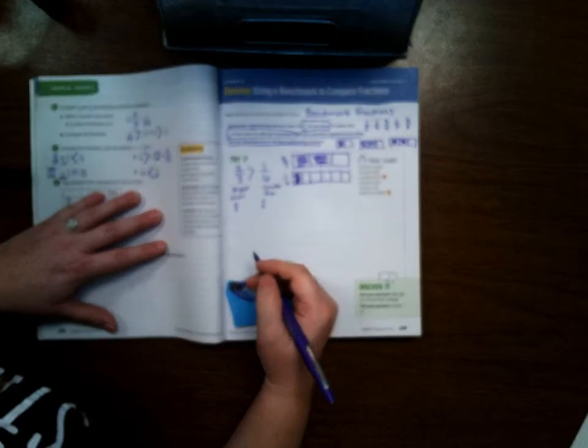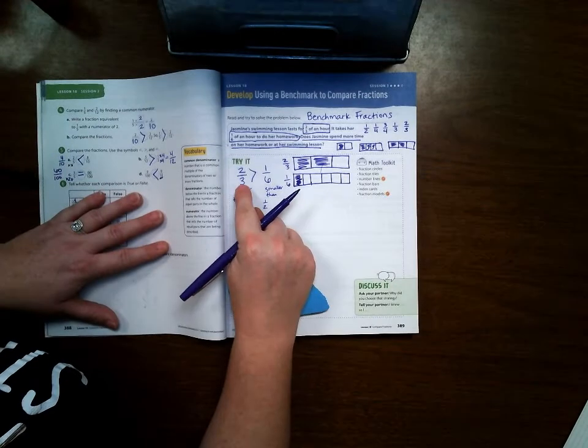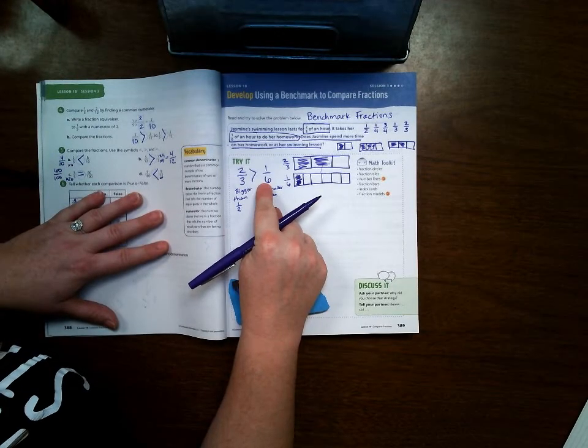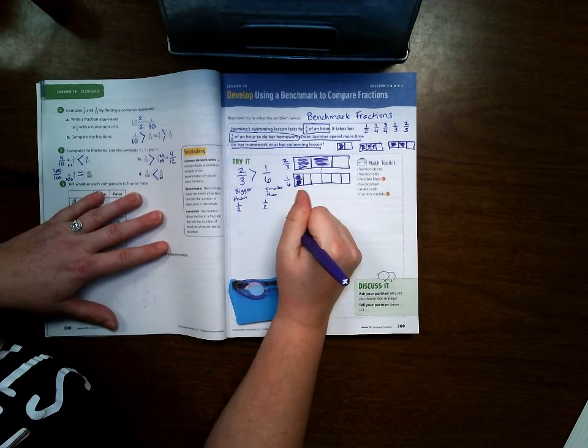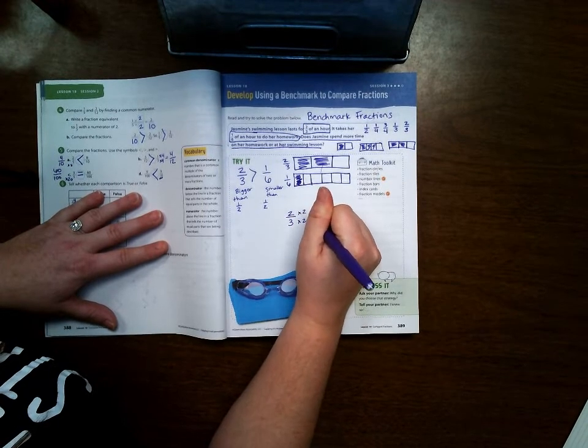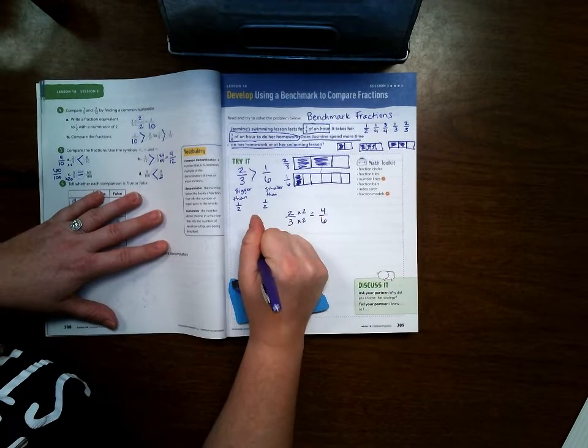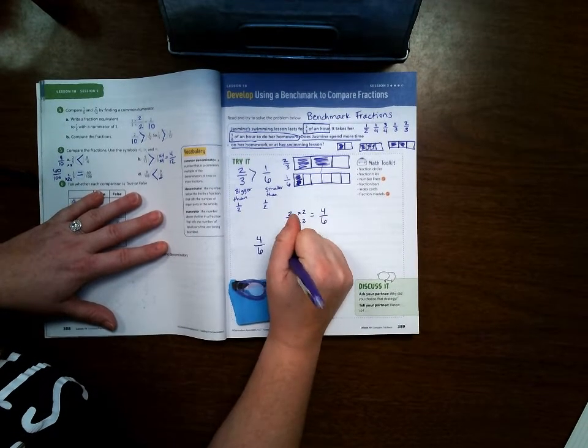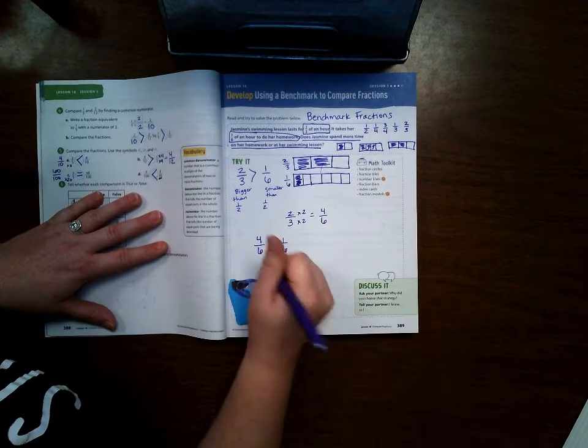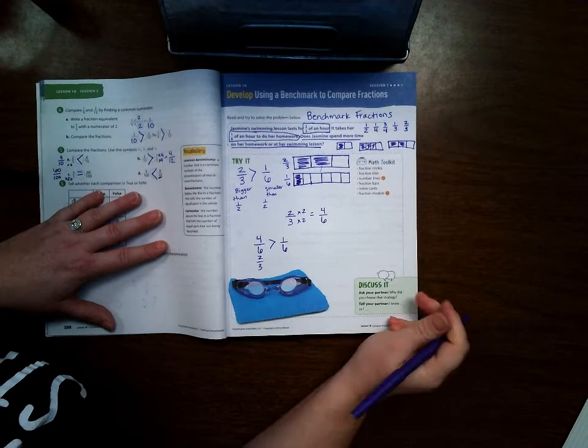I can also make a common denominator. Three can easily be made into six by multiplying by two. So I can do two-thirds times two and I would get four-sixths. Then I can compare four-sixths to one-sixth and see that four-sixths is bigger, which means that two-thirds is bigger.